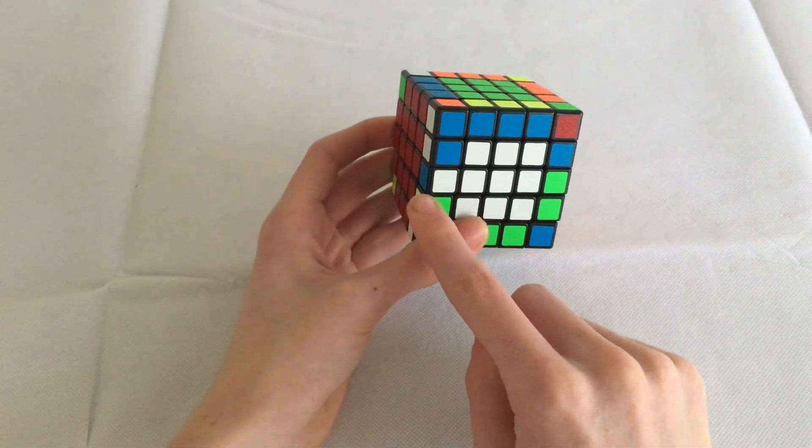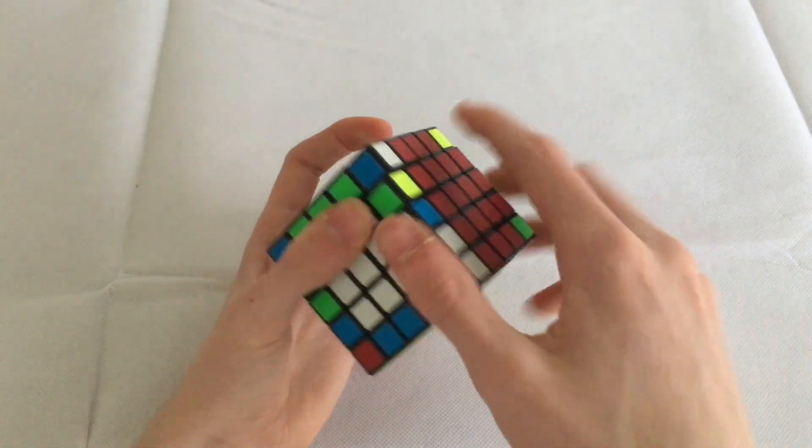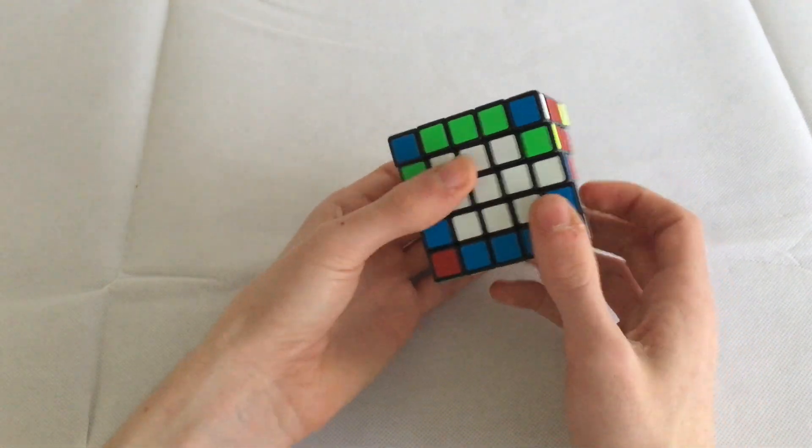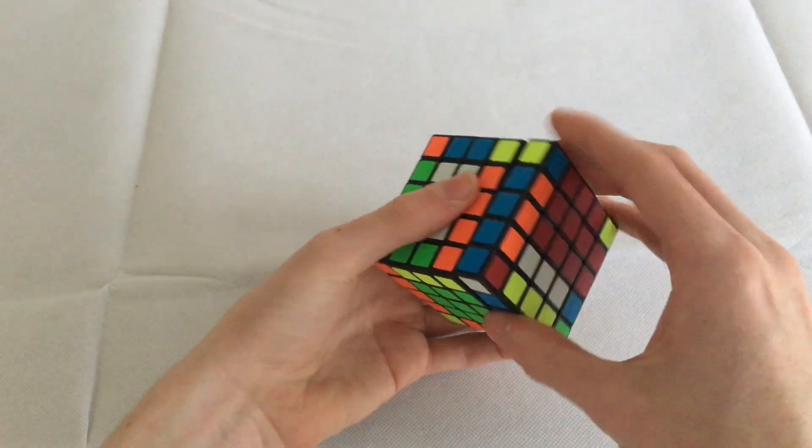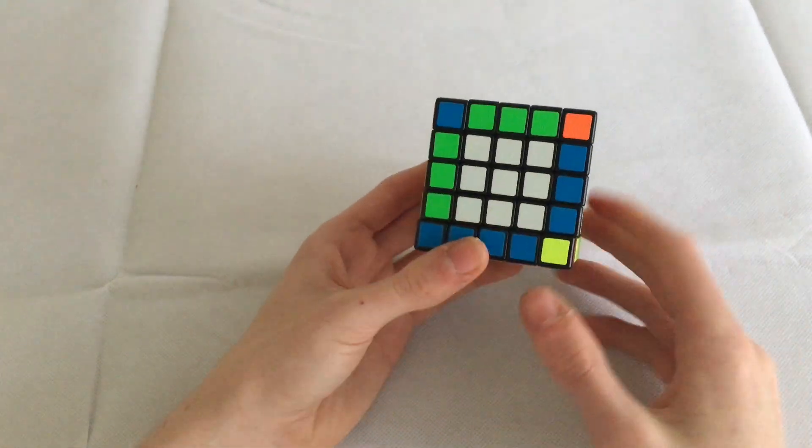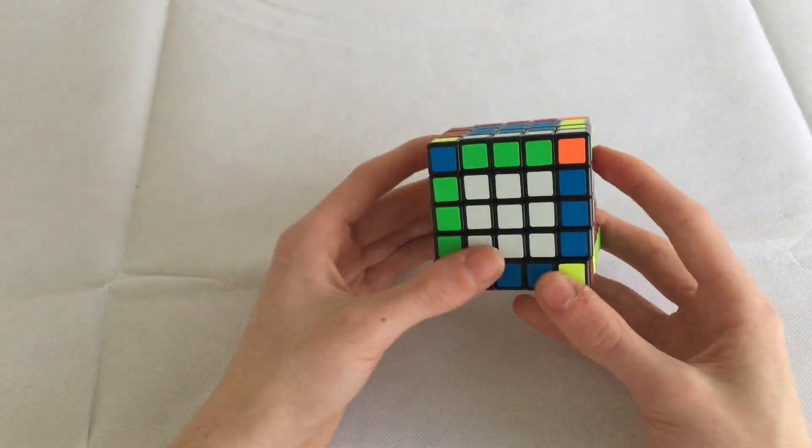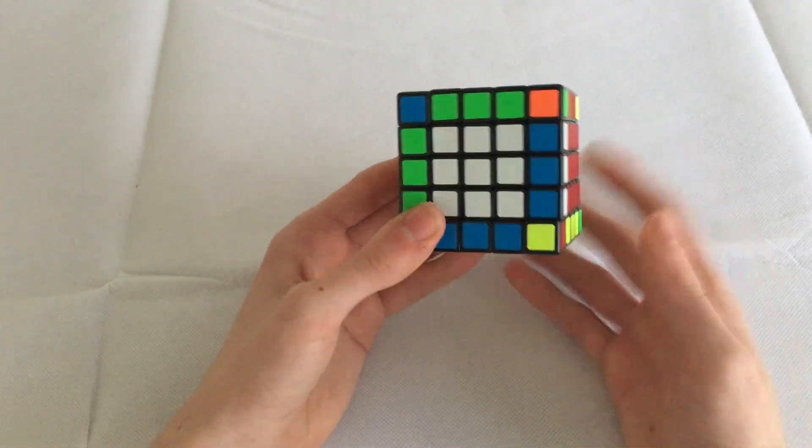So if we turn it around like this, we can go ahead and slice, perform our algorithm, slice back, and the two edges are solved. This case saves so much time and I definitely would recommend you do using this because nobody likes having to perform the parity algorithm twice.